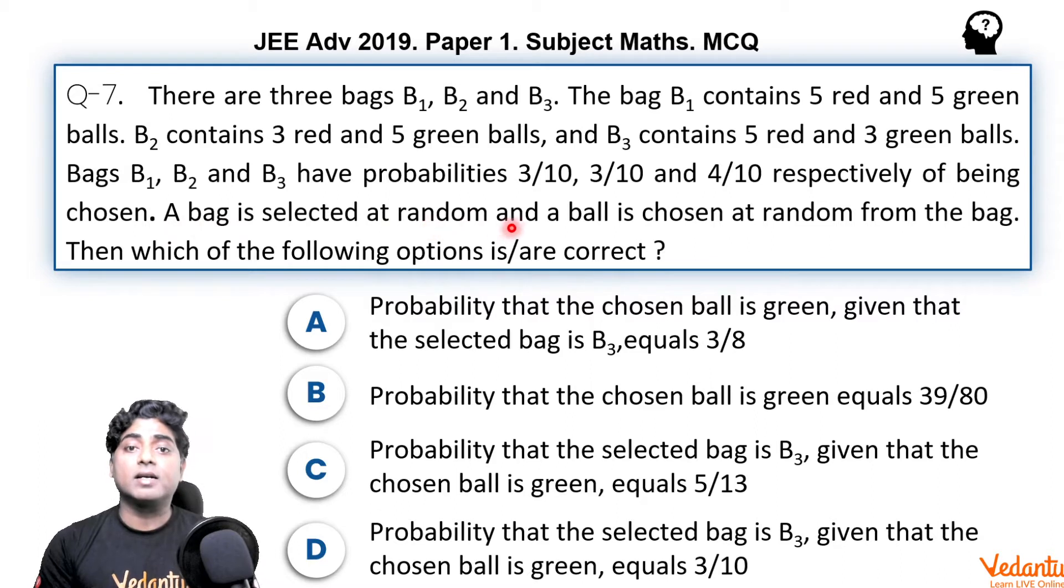A bag is selected at random and a ball is chosen at random from the bag. Then, which of the following options are correct? More than one option maybe correct. Looking at the options, they ask about usual things. You do these kind of problems very frequently in the chapter probability. So it's not a tough task to track the correct option.